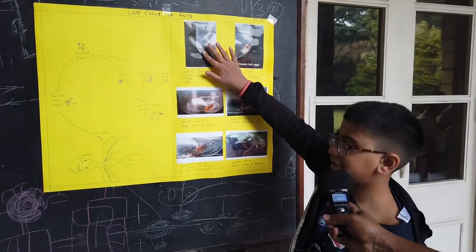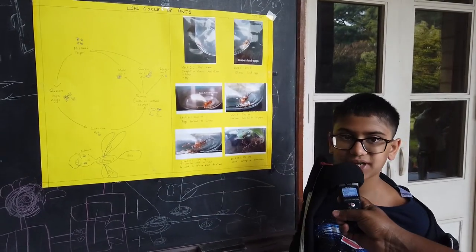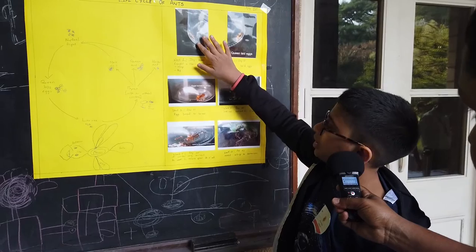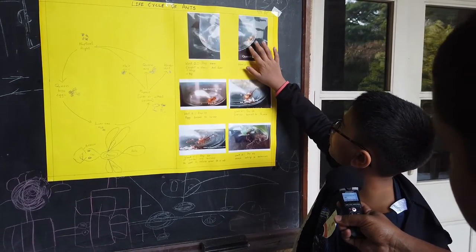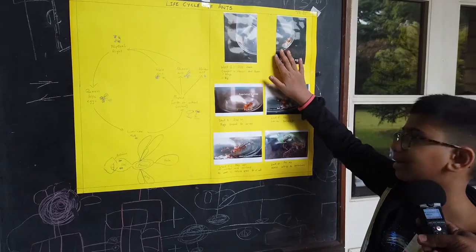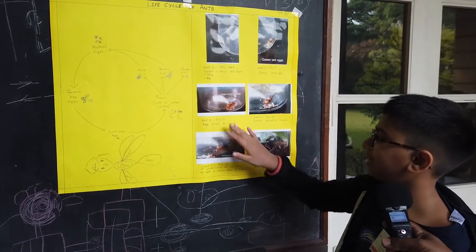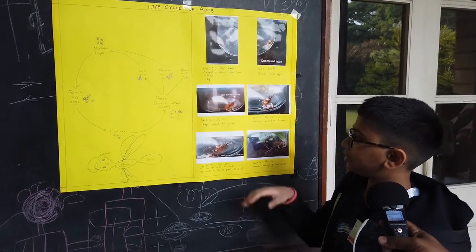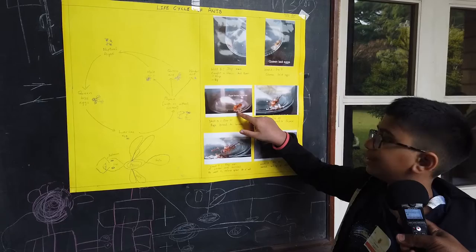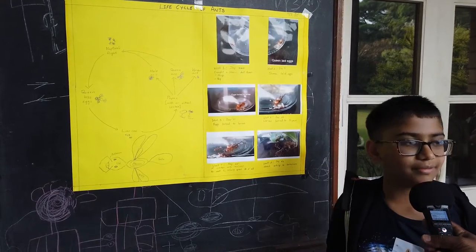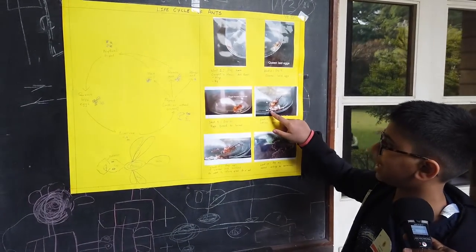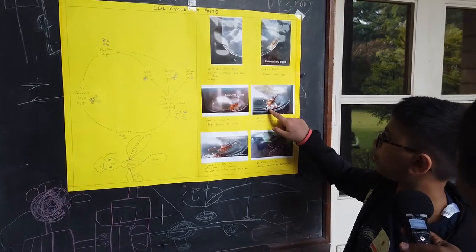I caught a queen ant named Flyaway. She laid eggs on day five — you can see that white dot. The eggs then hatched into larvae; those long white things are the larvae. Finally, they turned into pupae, which are the long yellow things.